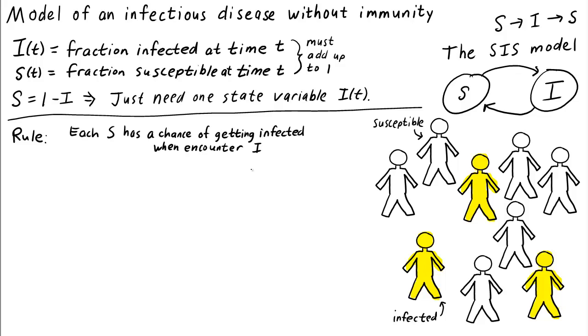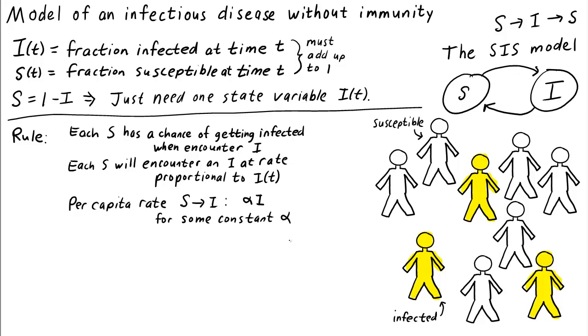Each uninfected or susceptible person has a chance of getting infected when encountering an infected person. And each susceptible person will encounter an infected person at a rate proportional to the number of infected people. So therefore, the per capita rate at which a susceptible person is infected is equal to alpha times i for some constant alpha. For our model, we want the total rate at which susceptible individuals are infected.